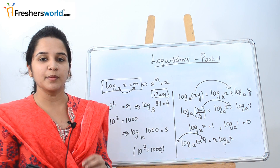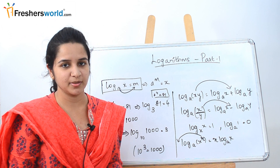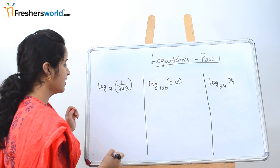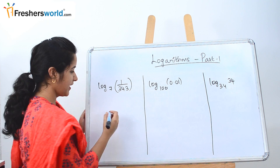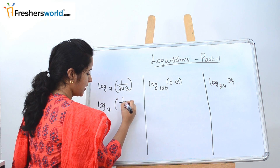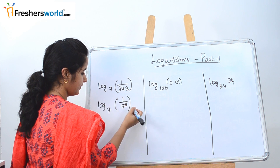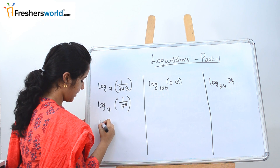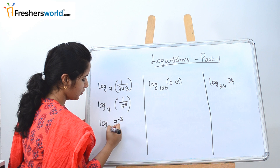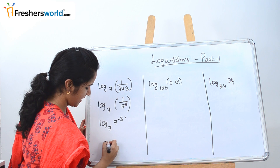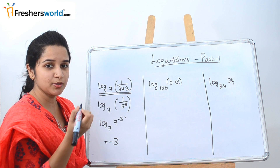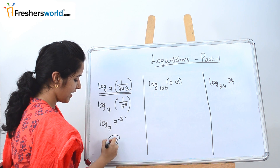Let's solve a simple sum: log_7(1/343). Since 343 = 7^3, we have 1/343 = 1/7^3 = 7^(−3). Both the base values are the same, so the value of x is −3. Log of 1/343 to the base 7 equals −3.